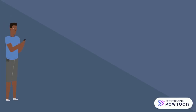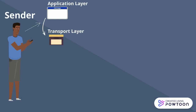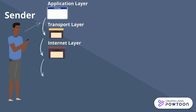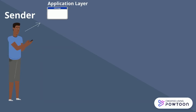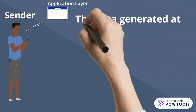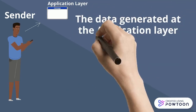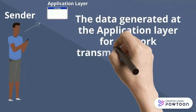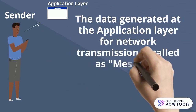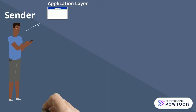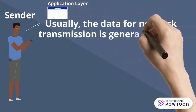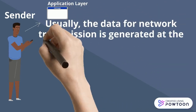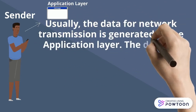So what are these following layers? This layer is called the application layer. The data generated at the application layer for network transmission is called a message. The data for network transmission is generated at the application layer.